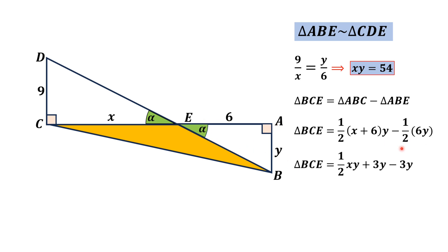Simplifying this, we get 1/2 XY plus 3Y minus 3Y. This 3Y cancels out, and we have the area of triangle BCE, which is the shaded region, equal to 1/2 XY.